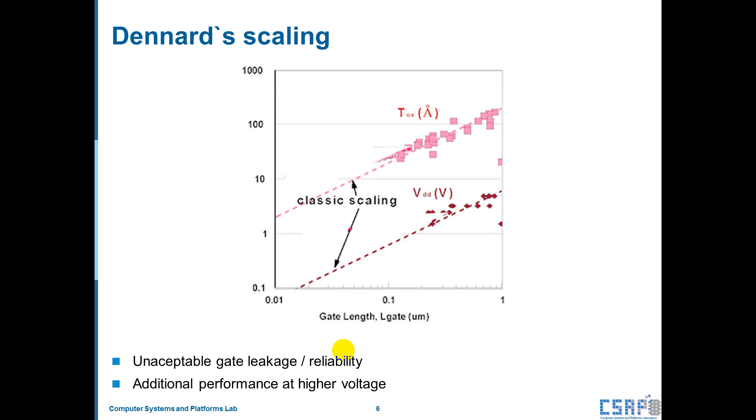This is a graph for Dennard's Scaling. In this graph, as gate length is decreased, you can see right to left, as gate length is decreased, the thickness of oxide and voltage will also decrease. But it is just ideal scaling.